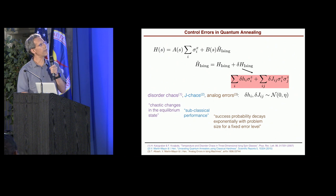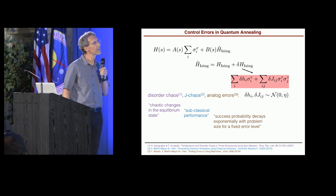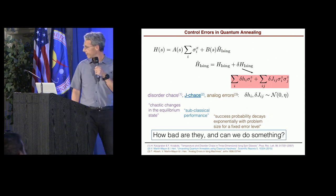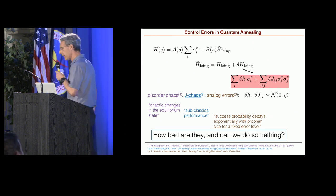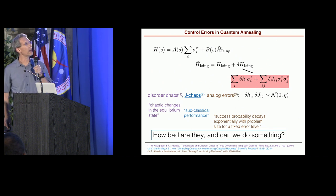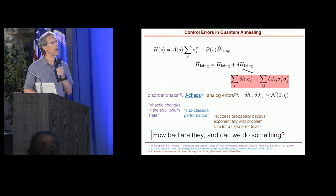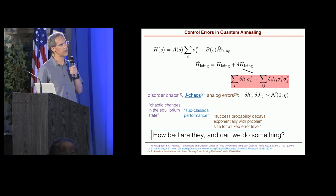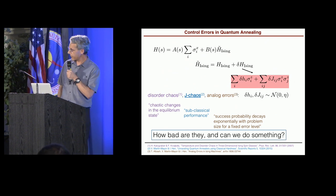And in every case, if you check these references, these are quotes, bad stuff happens. So the question is, how bad are these control errors, these analog errors, or as I will refer to them from now on as J-chaos errors? How bad are they? And can we do something about them?